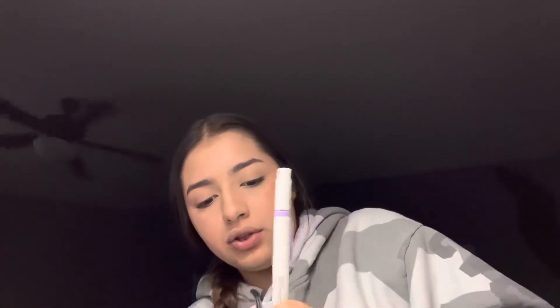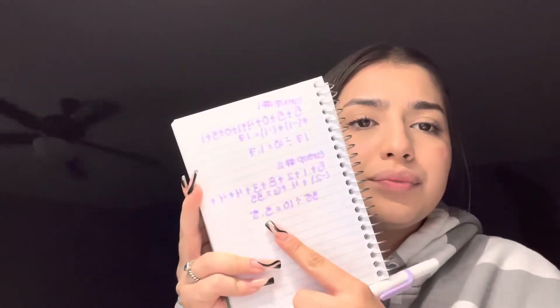Now we'll do the same process for the other group. I added them all up and the total for the second group is 35. So 35 divided by 10 is 3.5. That is the mean for the second group.